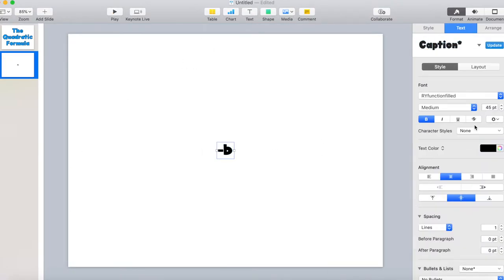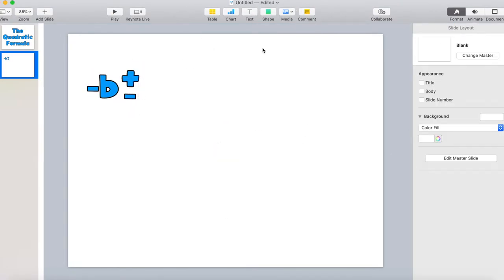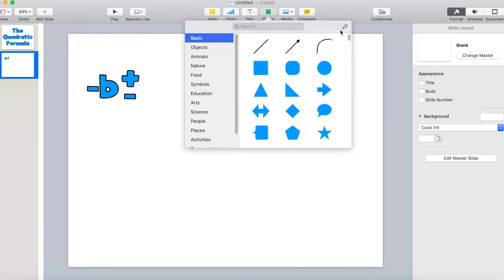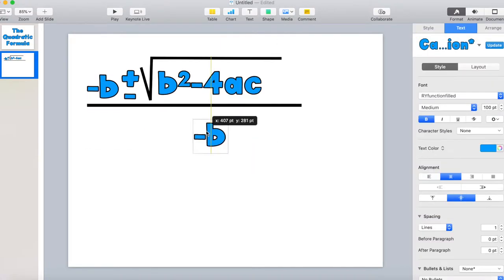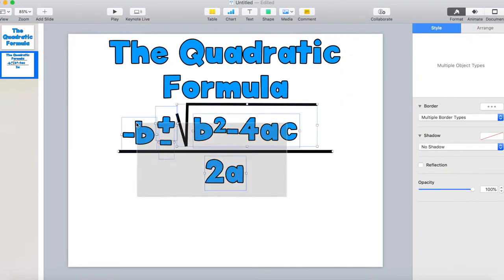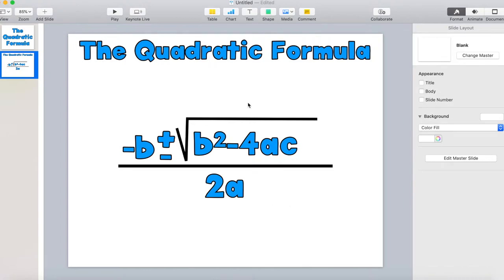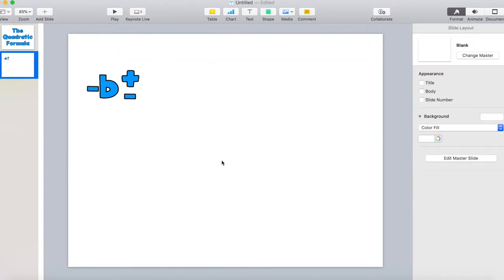So here's the secret: making everything that you talk about a separate text box. That's really all that it is. And once everything is a separate text box, then you animate everything individually in the order that you want to talk about things, the way that they come up on the slide.